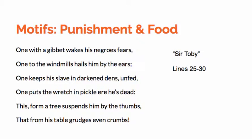Paired with that are images of the denial of food — in darkened dens, unfed; pickle, air. There's this really powerful mixture of the human as a commodity, a pickled commodity, getting at that idea of the slave as chattel, as property. And then crumbs — grudges, even crumbs — and this image of the table. So the table and the gibbet: the table where you eat, the gibbet where you're hung and tortured, are paired off with each other.